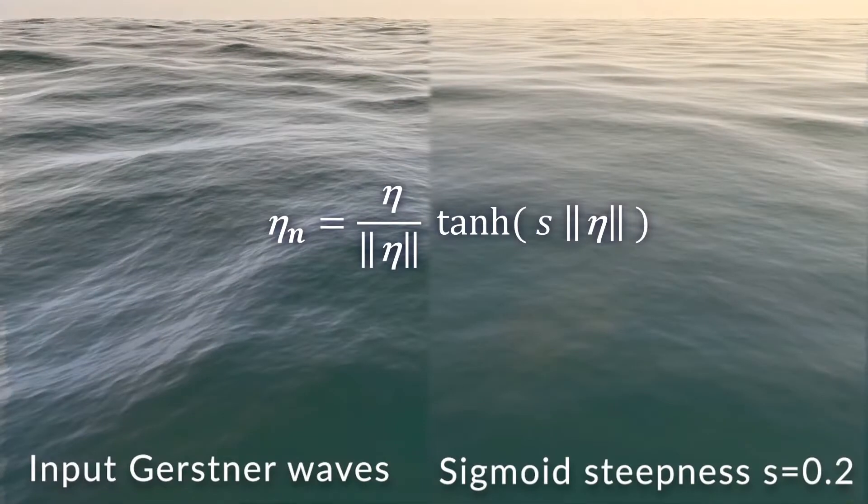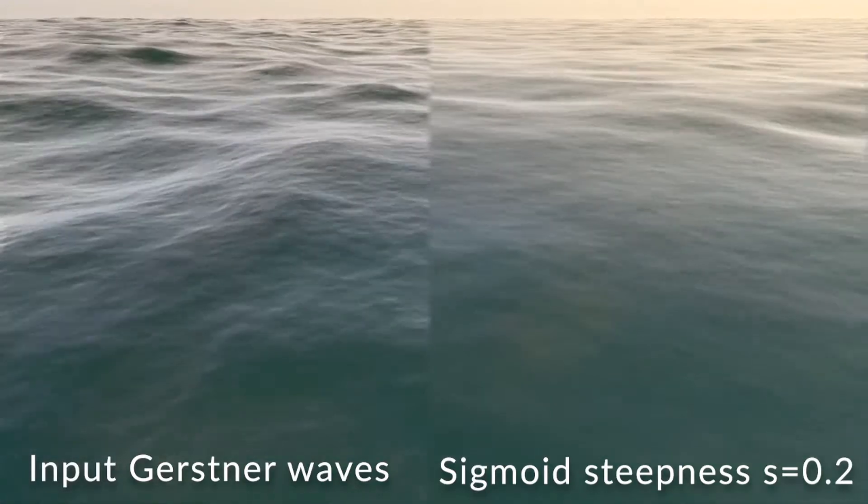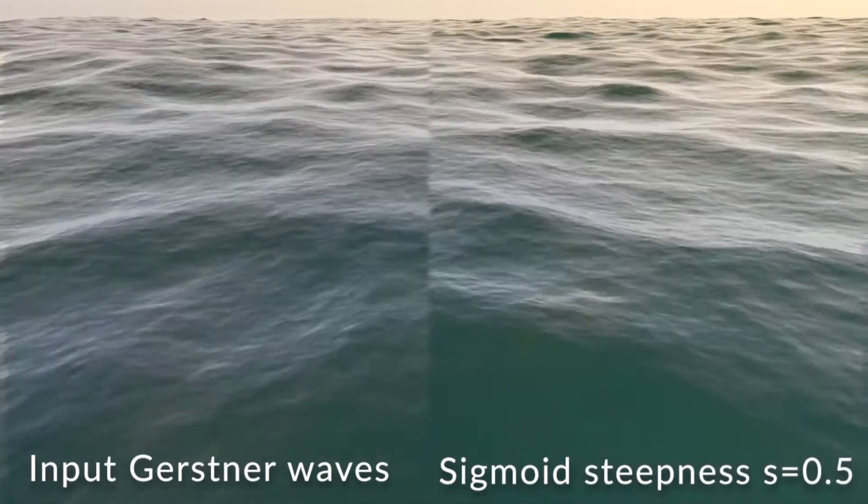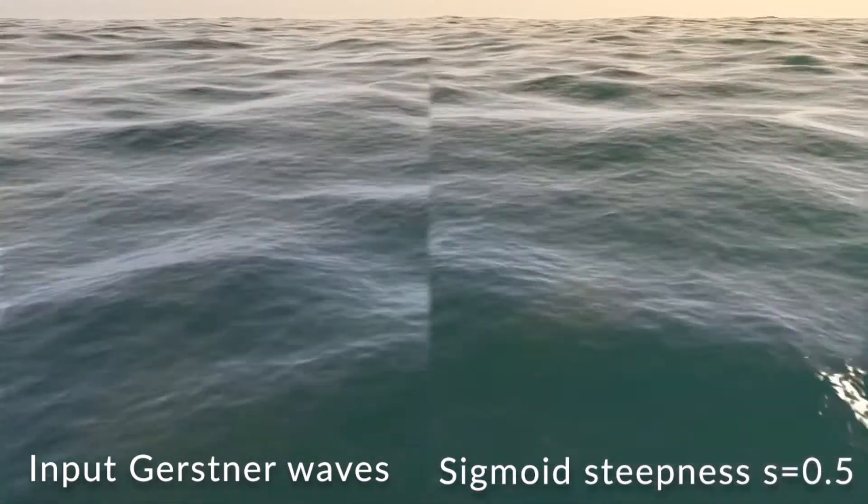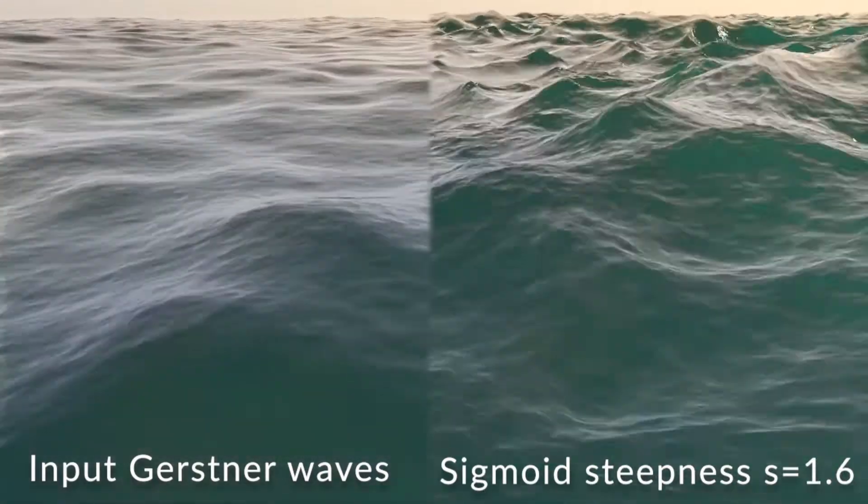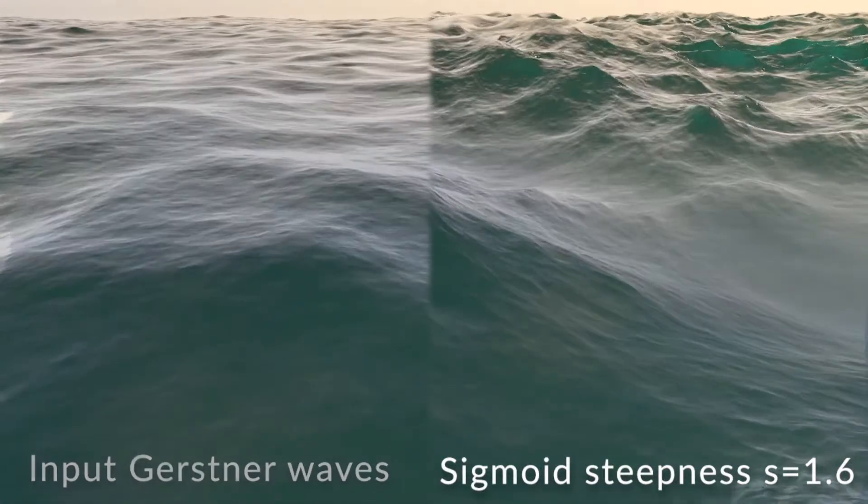The only parameter for this mapping is the sigmit steepness S. It acts as a sort of compression factor and here we show how it influences the output. A small S simply reduces the overall motion. We set S to 0.5 which mostly reproduces the input. Increasing S amplifies the waves but compresses wave ripples at peaks and valleys.